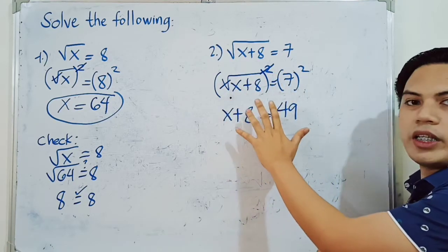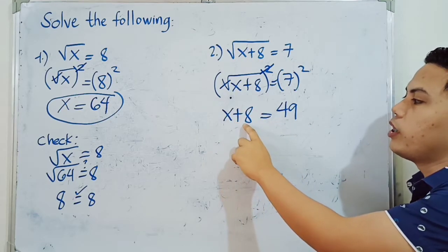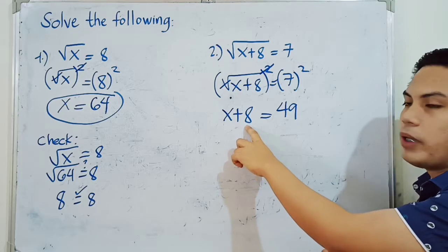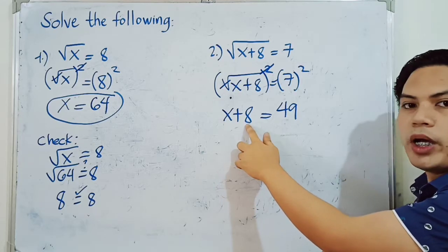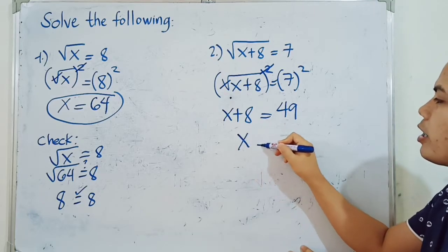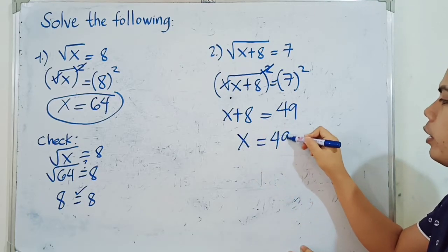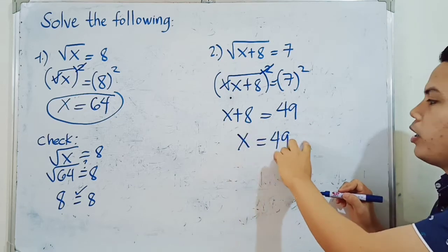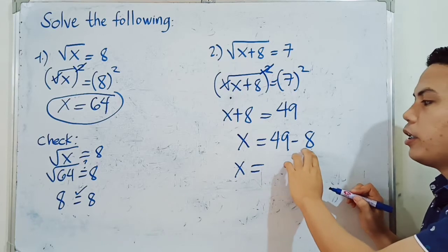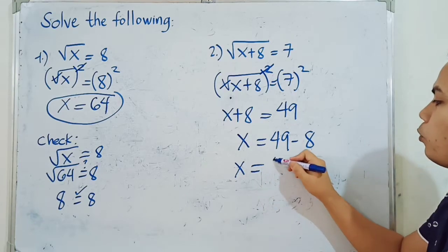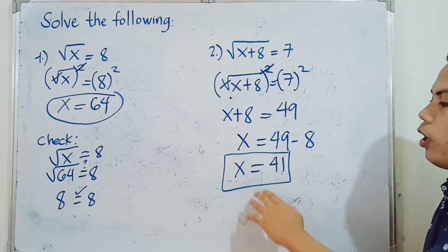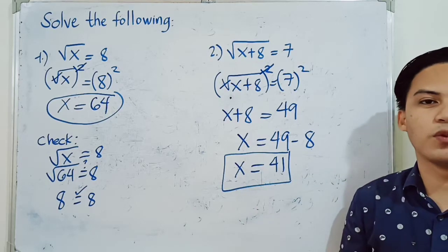Since there is no longer a radical sign, we can solve for X. We have the constant term 8, so we transpose it to the right side of the equation. We have X is equal to 49, and positive 8 becomes negative 8. So 49 minus 8 equals 41. Our final answer is X is equal to 41.